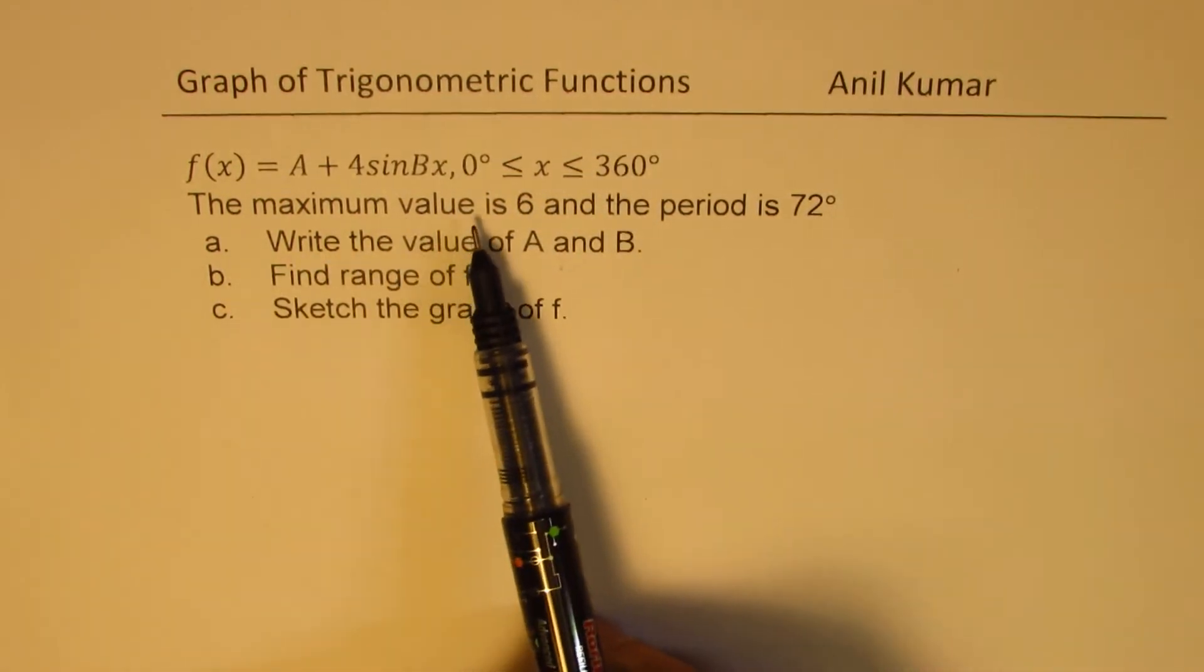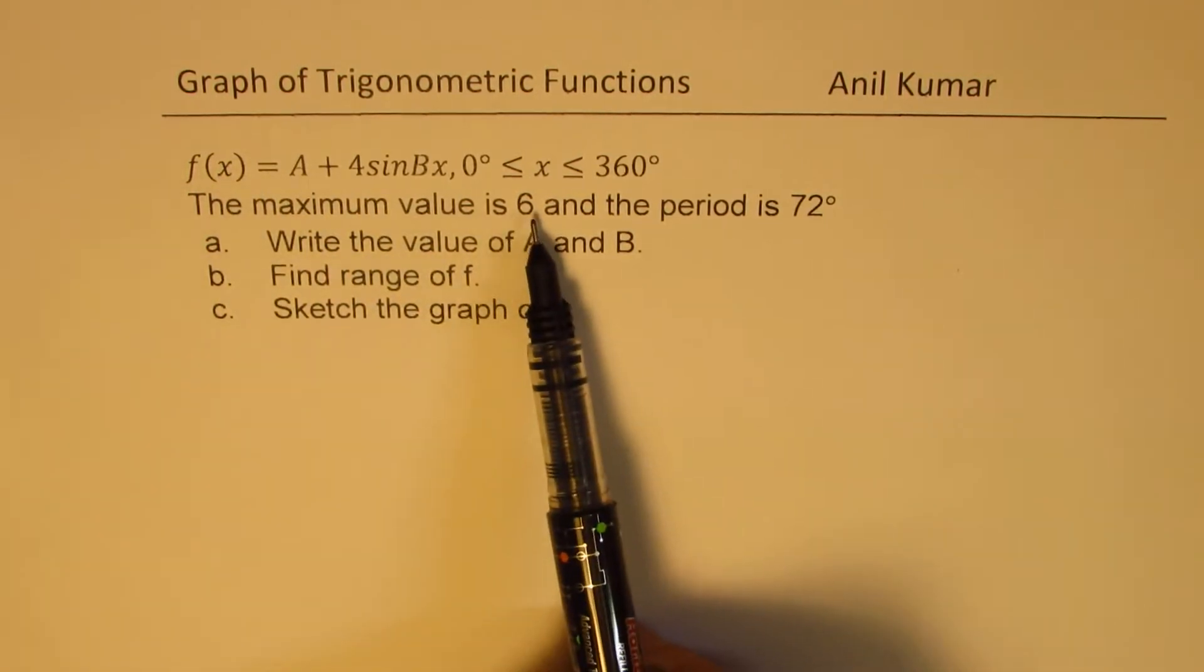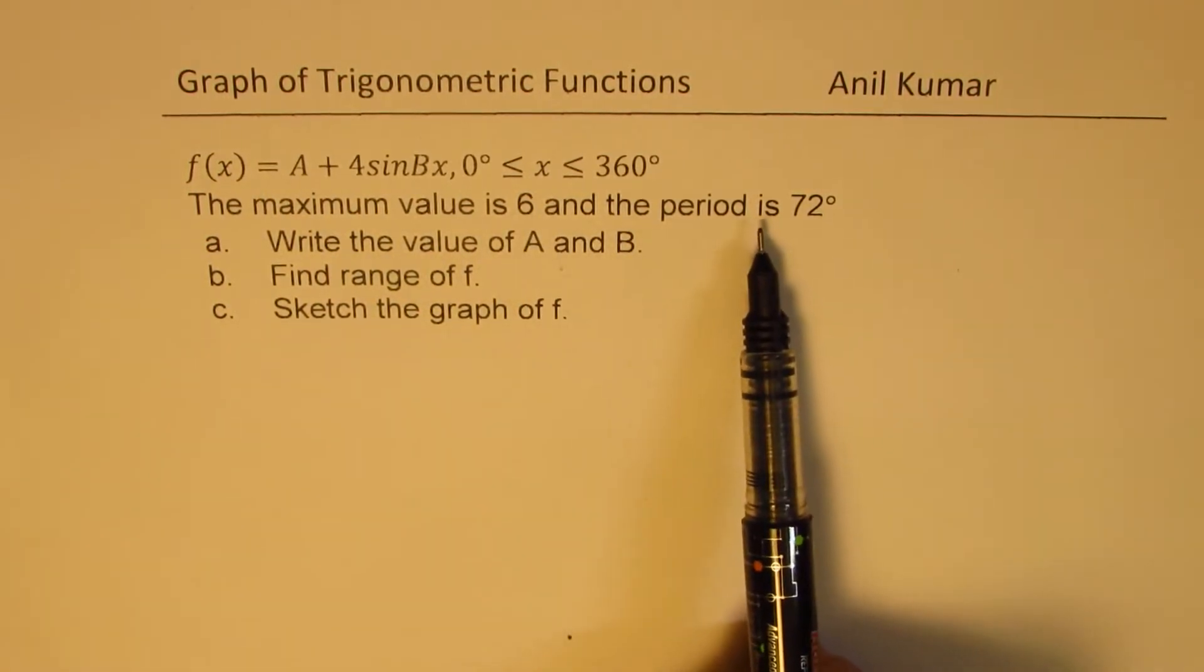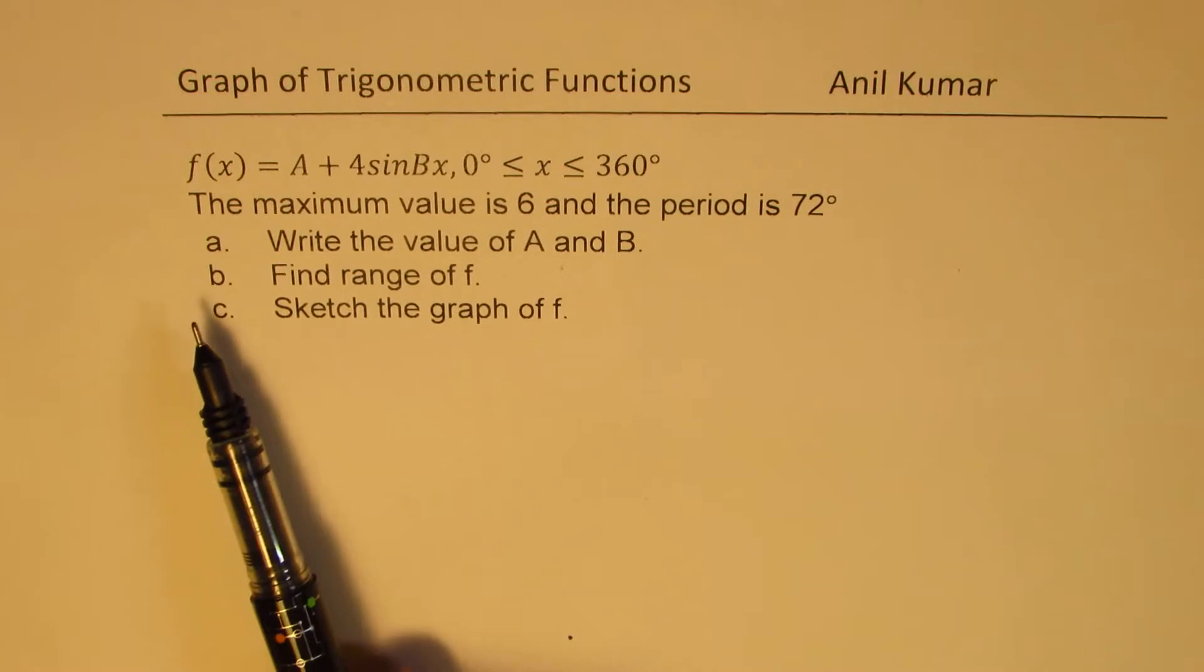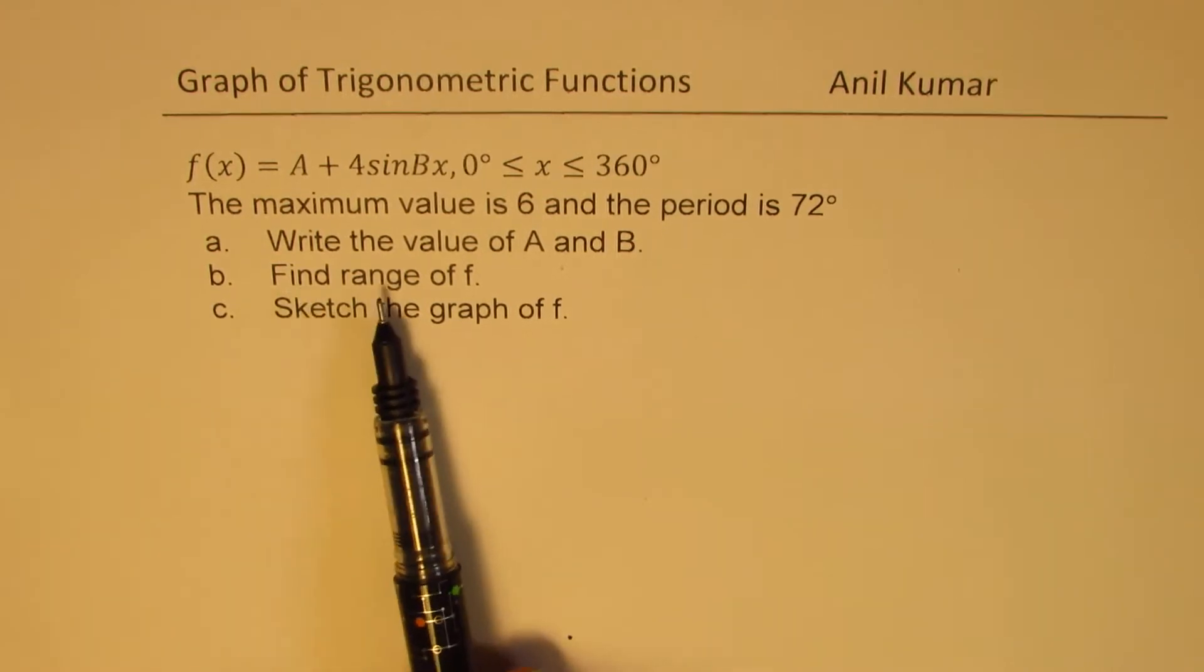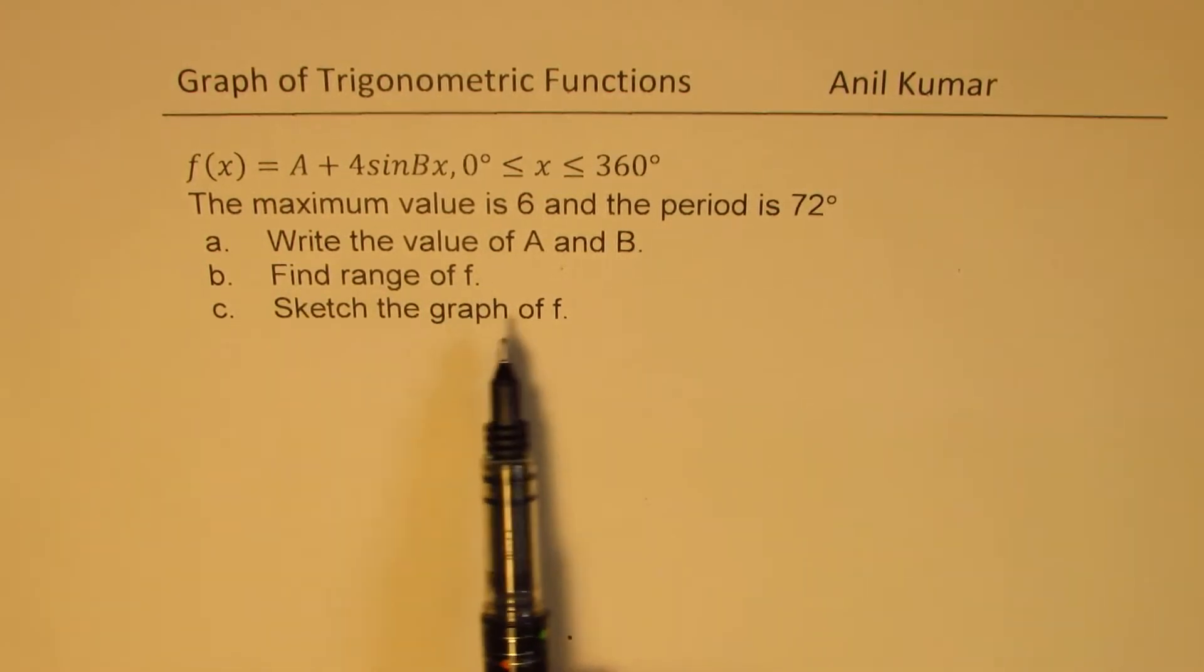The maximum value of this function is 6, and the period is given to us as 72 degrees. You need to answer these three questions. Part A, write the value of A and B. Part B, find range of f, and part C is to sketch the graph of the function given to you.